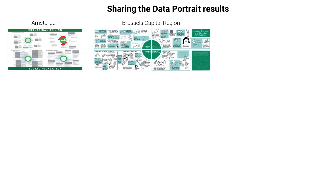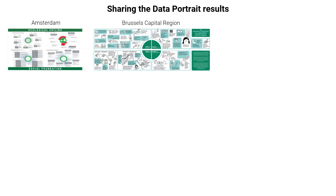Here are just a few examples. Amsterdam was the first city to publish a portrait, and their approach was to show the targets and indicators with rings for each lens and text boxes for the qualitative data. The Brussels Donut team built on Amsterdam's approach, using drawings to help make the story of their portrait more fun and welcoming. Then the Leeds Donut Coalition and Civic Square in Ladywood, a neighborhood in Birmingham, both made distinct and incredibly valuable contributions to visual storytelling with the data portrait, combining words, icons, drawings, and bar charts all weaved together along a kind of pathway.